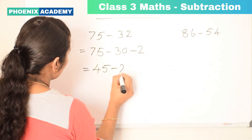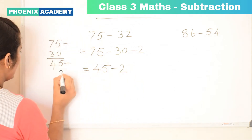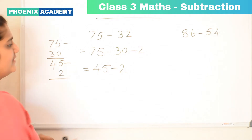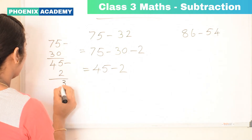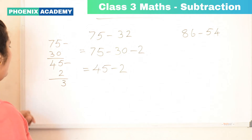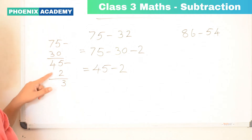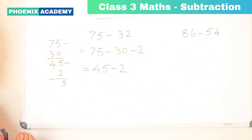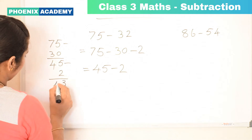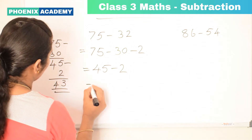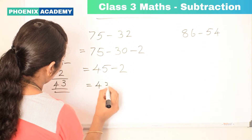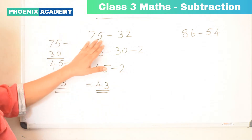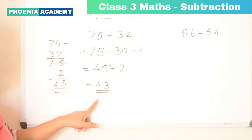45 minus 2: 5 minus 2 is 3. Since we don't have any values in the 10's place, we consider it as 0. So 4 minus 0 is 4 itself. So the difference of 75 and 32 is 43.